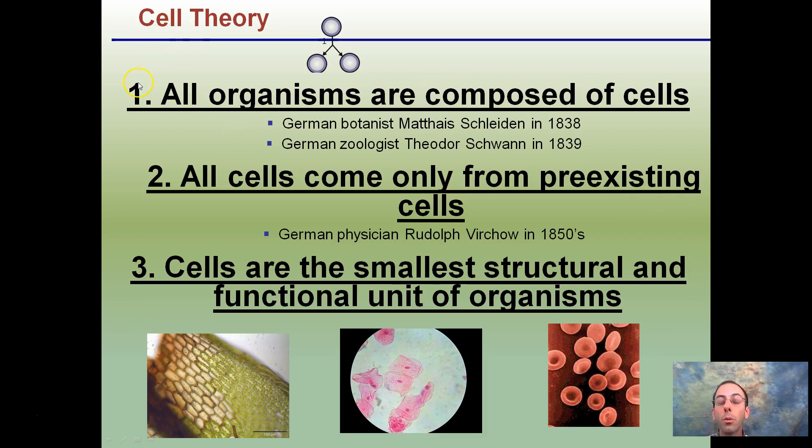The cell theory has three components. The first one is all organisms are composed of cells. And this is again 1830s. Late 1830s is when this was kind of first came about.